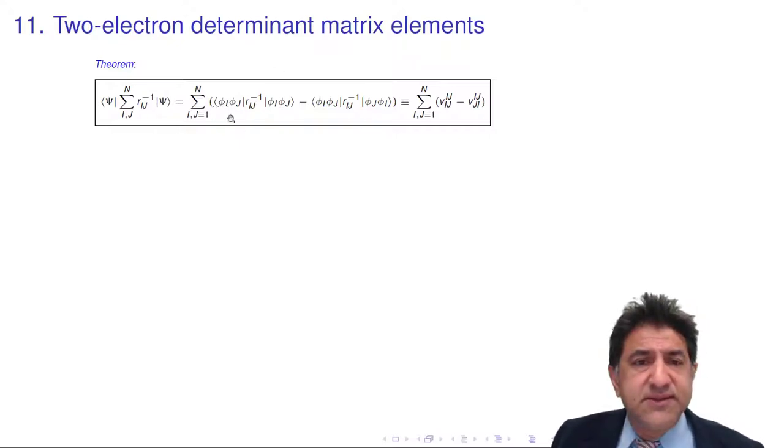It turns out that the result is this. It's an integral sum over i and j between all pairs of orbitals, phi i, phi j, one on rj, one on ri j, phi i, phi j. This is one of the terms, and we have an exchange term.